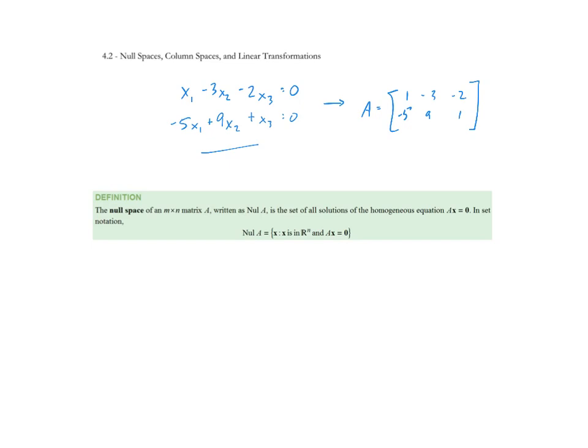In this section, we take another look at that solution with a different twist. We'll start with the definition for the null space of a matrix. The null space of an M by N matrix A, written as Nul(A), is the set of solutions to the homogeneous equation AX equals 0. Formally, the null space of A is the set of all x such that x is in R^n and A times x equals 0.